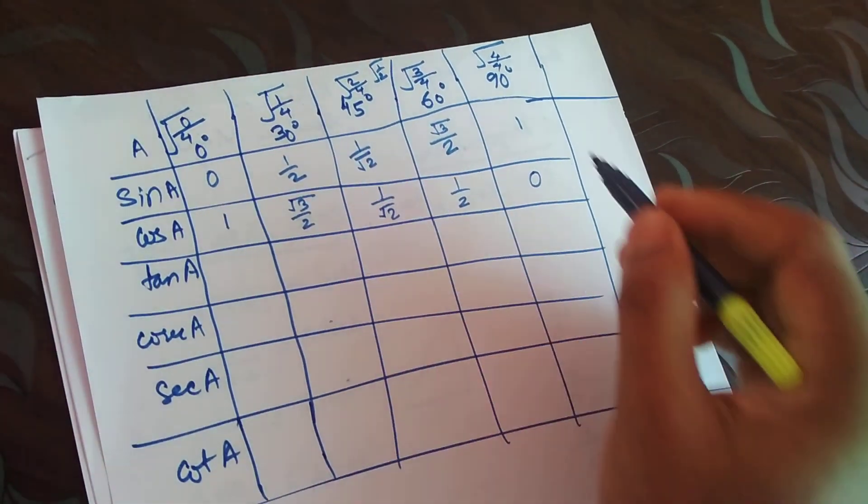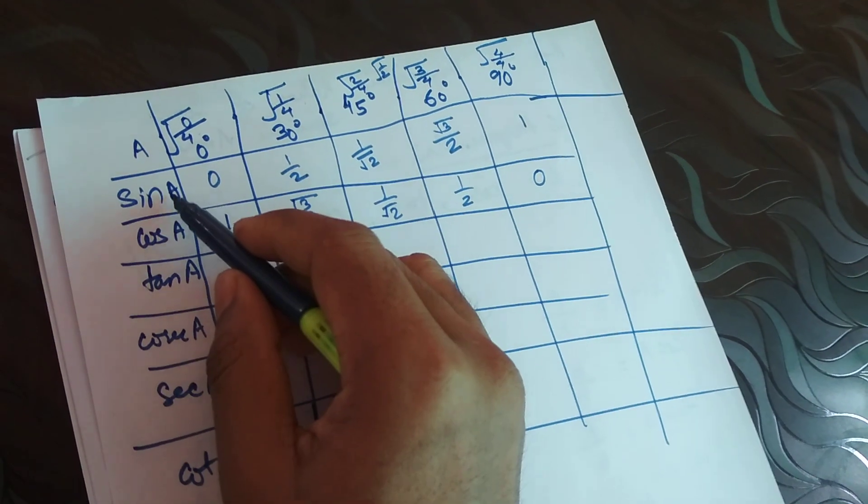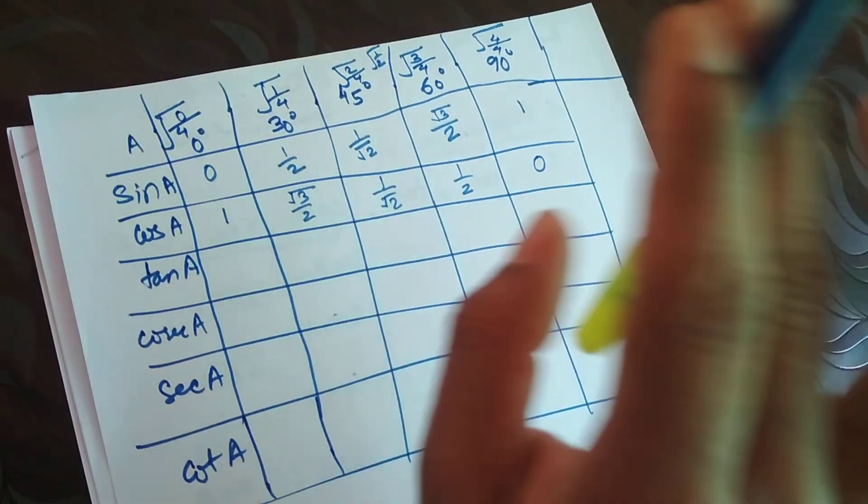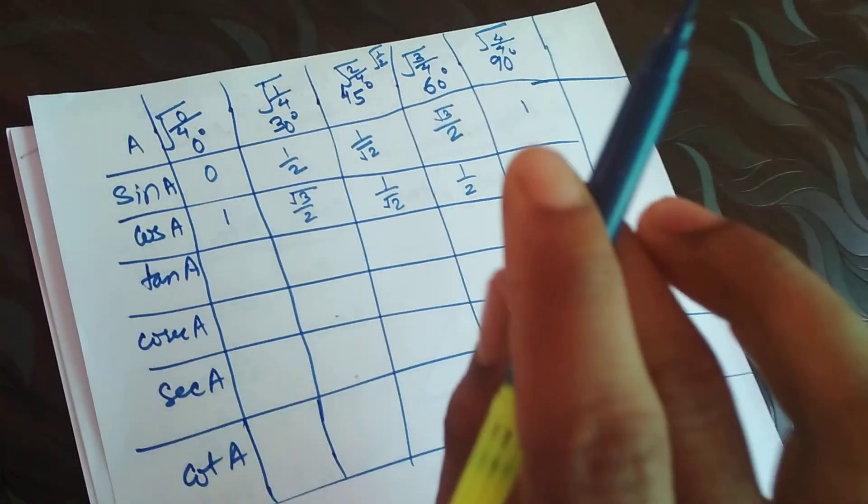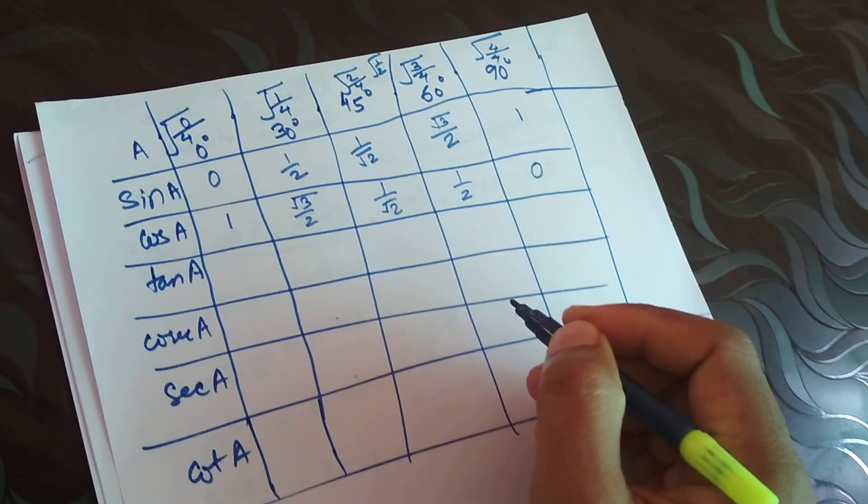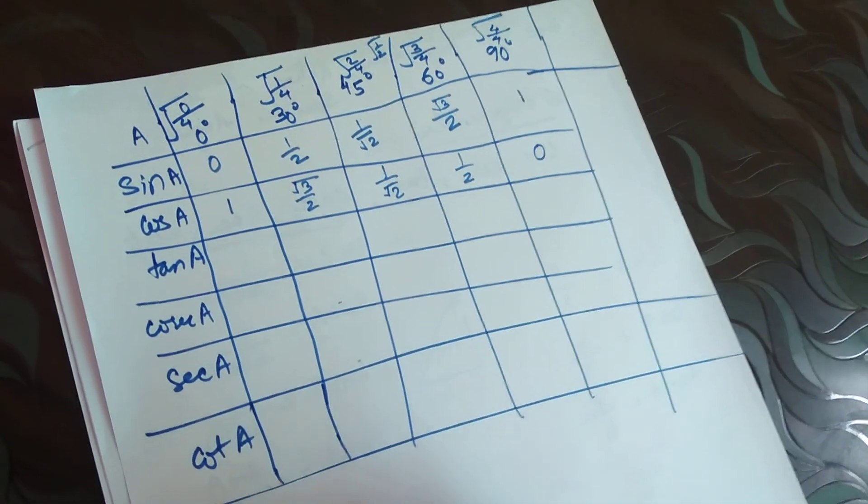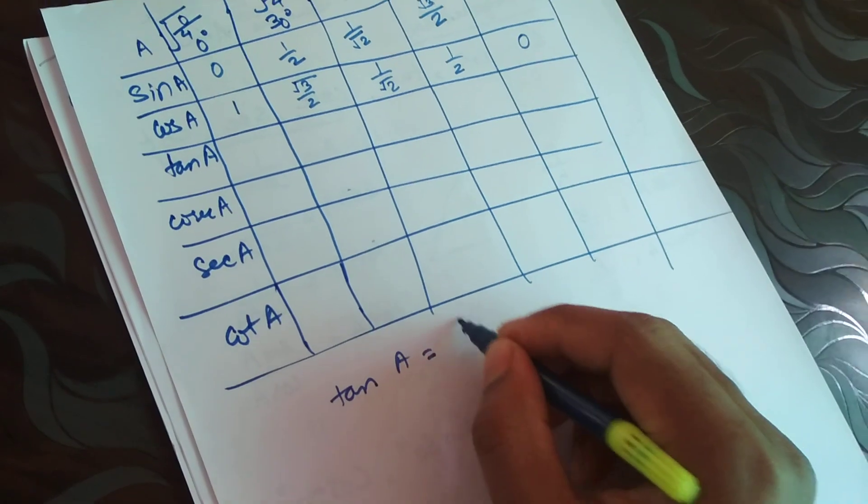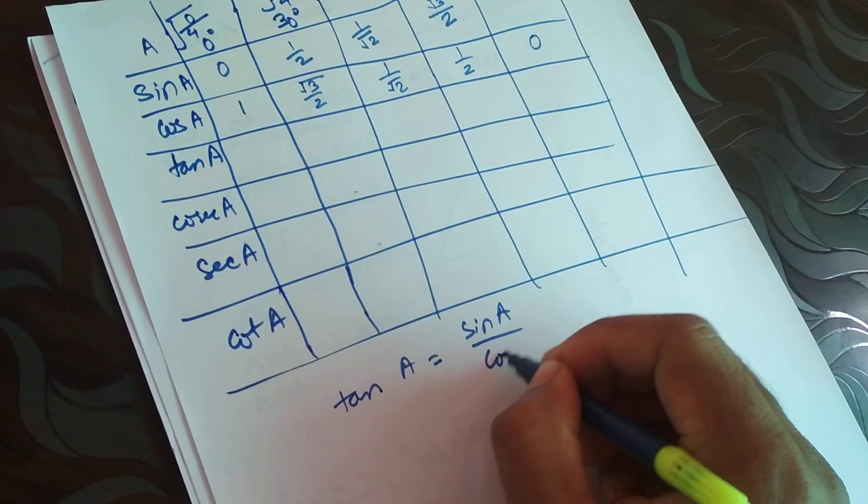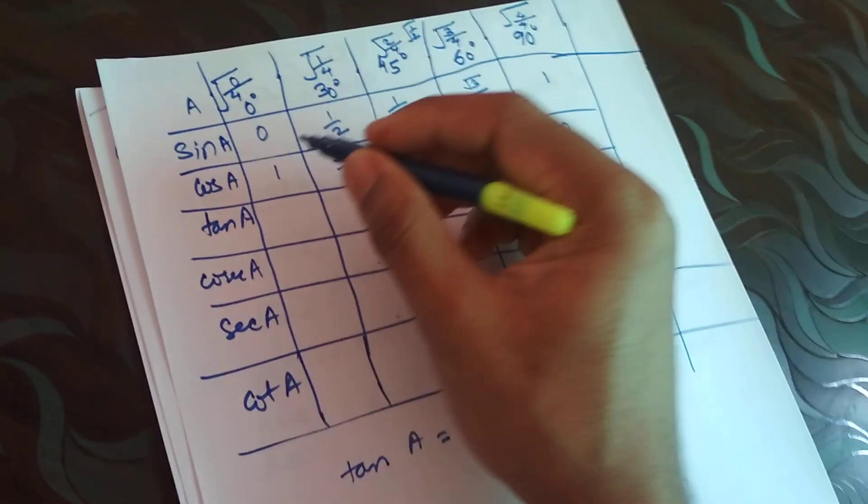Very easy terms. This is how we can get sine A and cos A of a particular angle - no need to memorize. Now tan, as I have said, tan is nothing but sine A by cos A. Now I will divide.